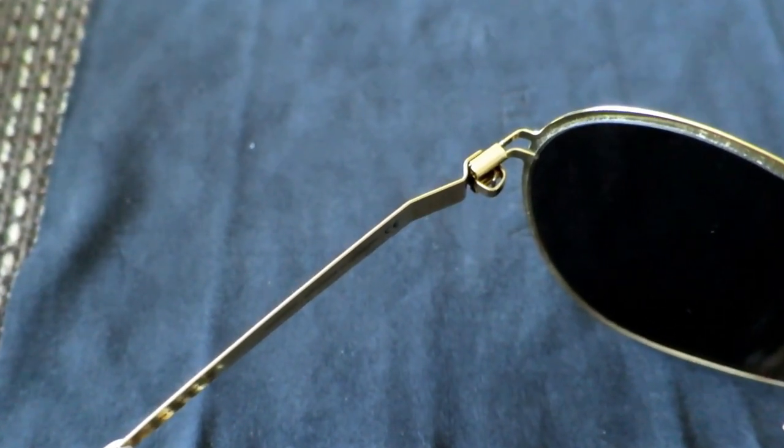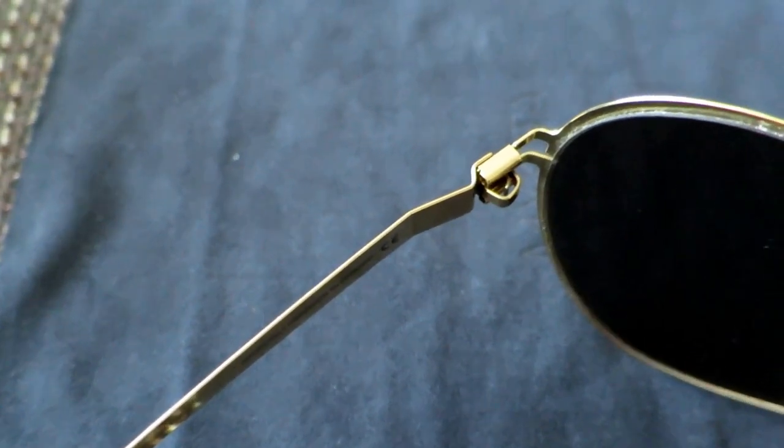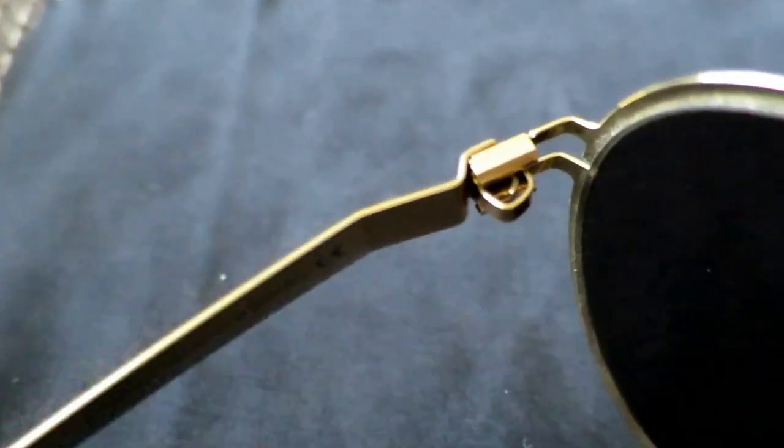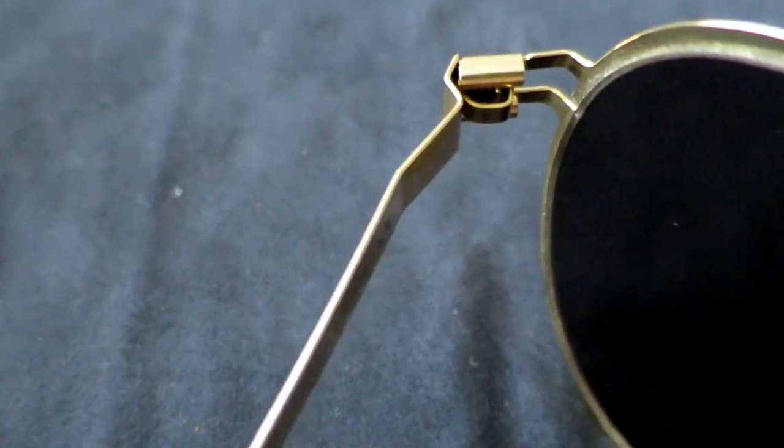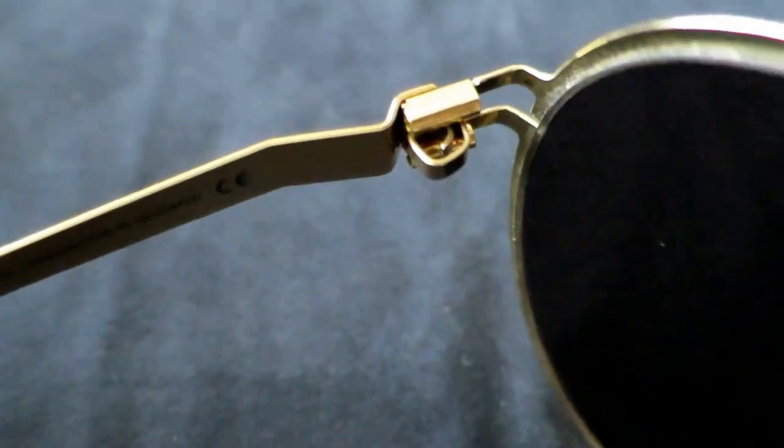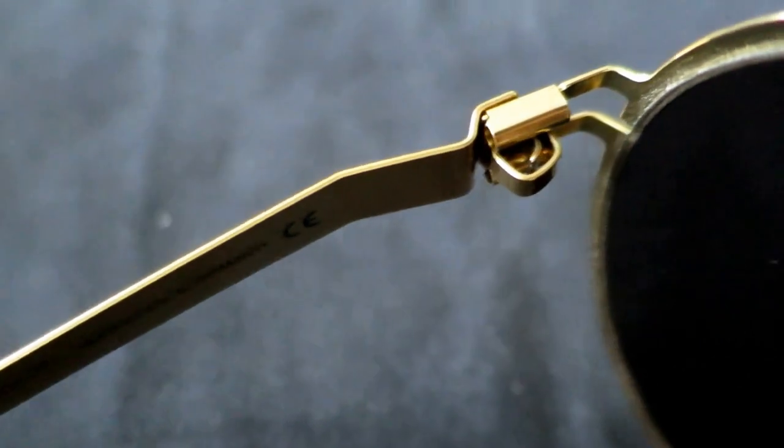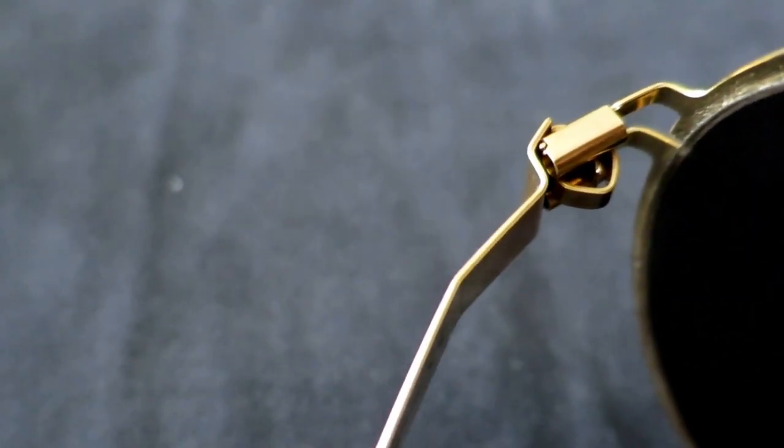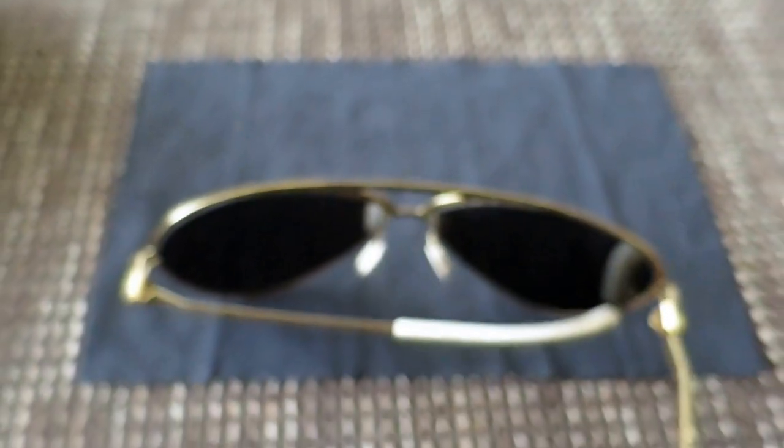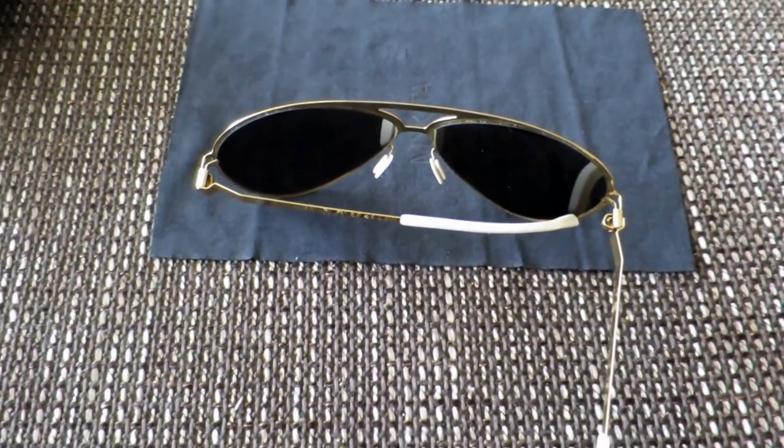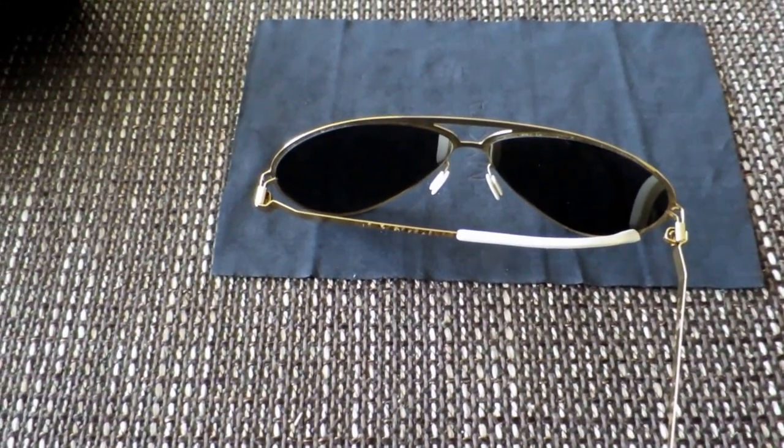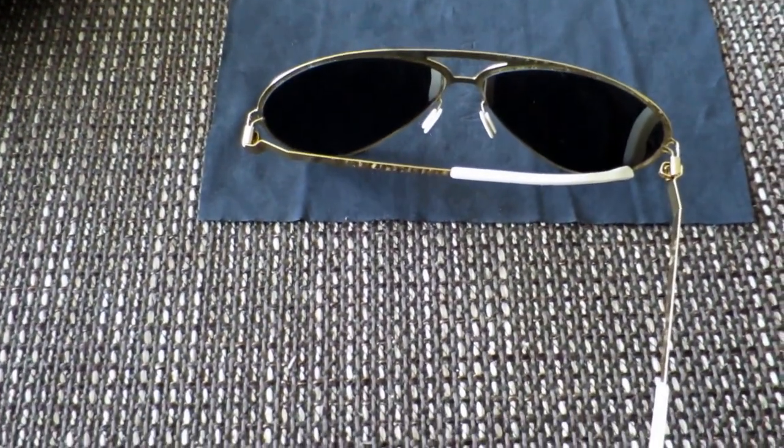One thing which is very nice and interesting about these sunglasses is that they don't have any screws on the hinges. The design of the hinges is a screwless design. It looks flimsy but it's not. It closes very firm, so if you want to wear them closed and put them behind your shirt that's not going to be a problem.